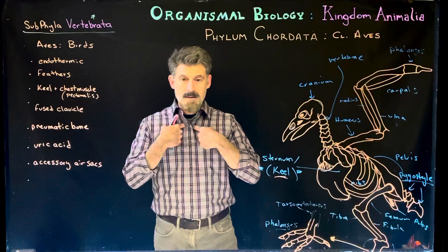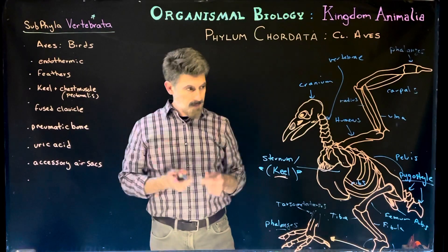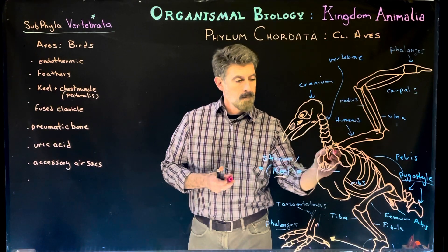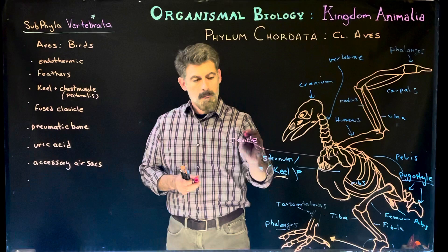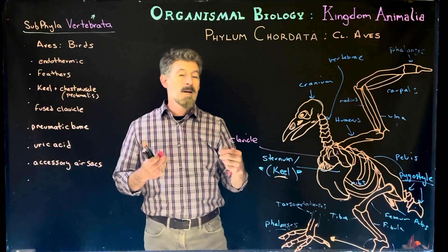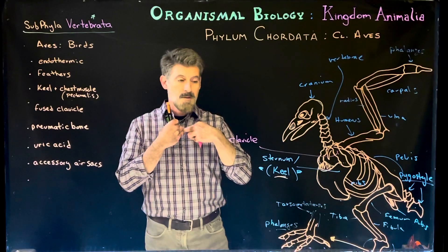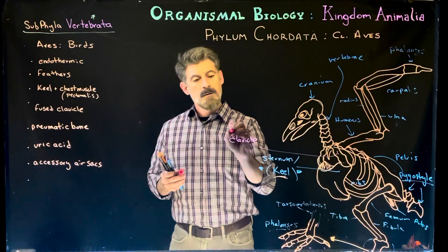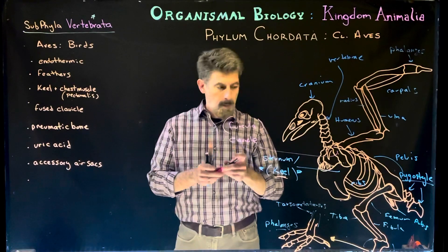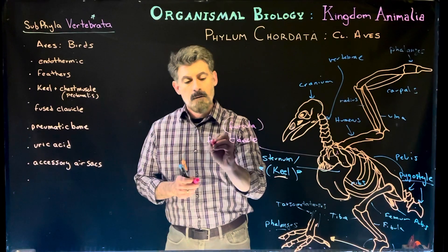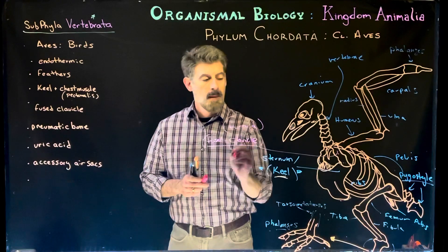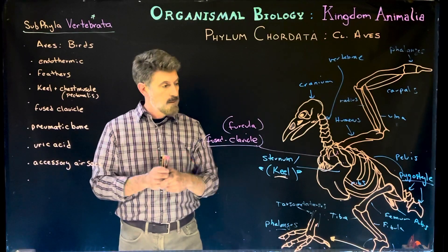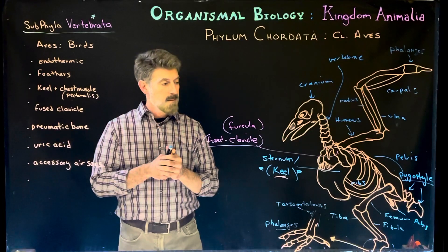We also have bones called clavicles — our collarbone — which extends from the sternum up into the scapula. In birds, what's unique is that the clavicle doesn't connect directly to the sternum; instead, the two ends of it fuse together, creating a structure called a furcula. The furcula is essentially a fused clavicle, and it's what we also call the wishbone. If you're familiar with the wishbone from a turkey, that fused clavicle is exactly what that bone is, and it's unique and important for flight.